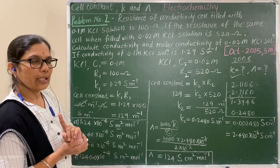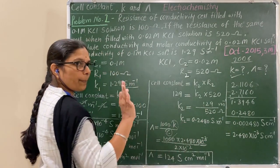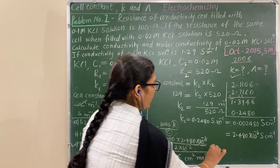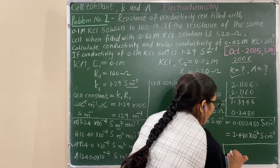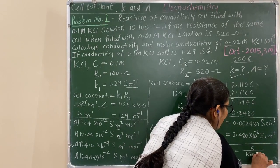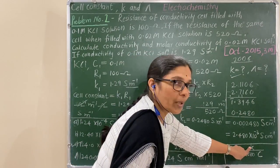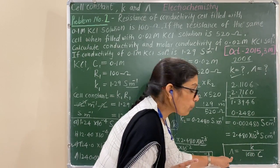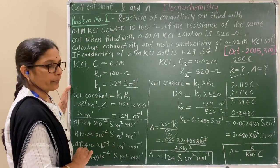One more approach: keep the conductivity in Siemens per meter as it is and use the formula lambda = conductivity / (1000 × C), where concentration is in mol per dm³. You will get molar conductivity directly in Siemens meter squared per mole.